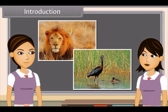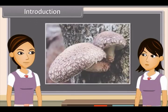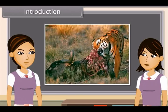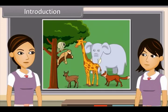We know that animals are heterotrophic and hence they depend on other organisms for their food. Animals need an external source of food. We can also say that they depend upon ready-made food, and this may come either from plants or from other animals. There is a wide variety of animals on the basis of their type of food.